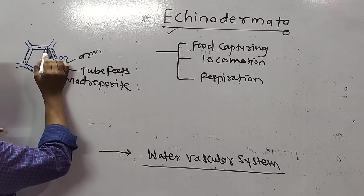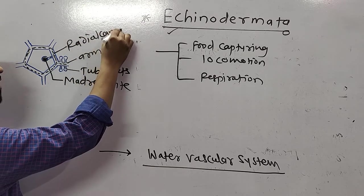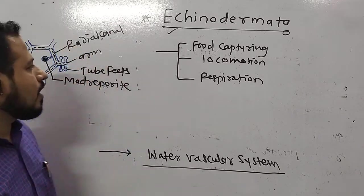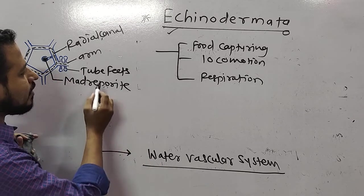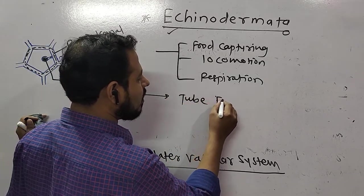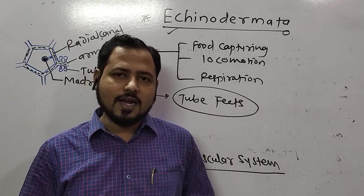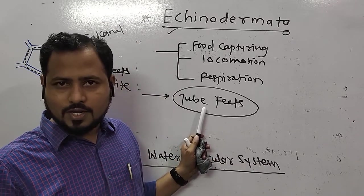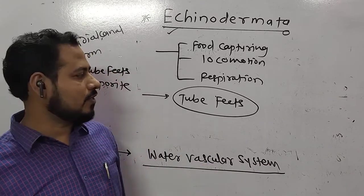Water enters into a special pentagonal disk called the radial canal, then into the arms of the starfish. Through these arms, water is released outside the body through specialized structures called tube feet. Tube feet are large, multi-tasking, multi-purpose structures helpful in locomotion, excretion, as well as capturing different types of materials.